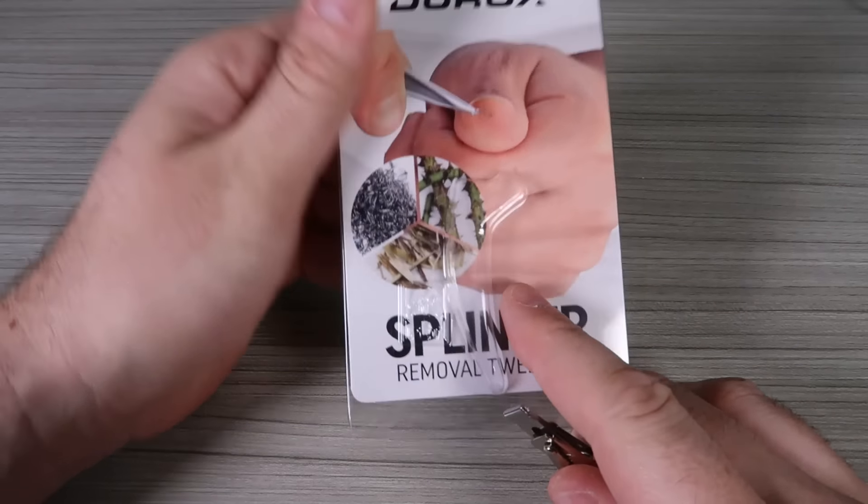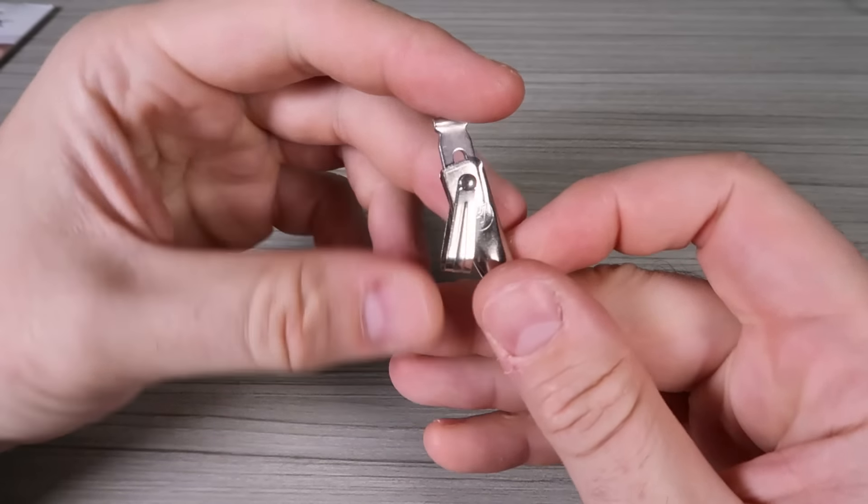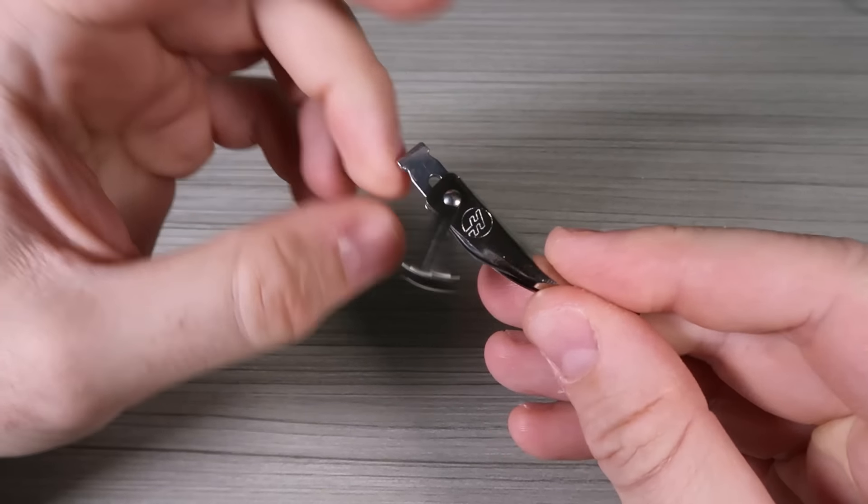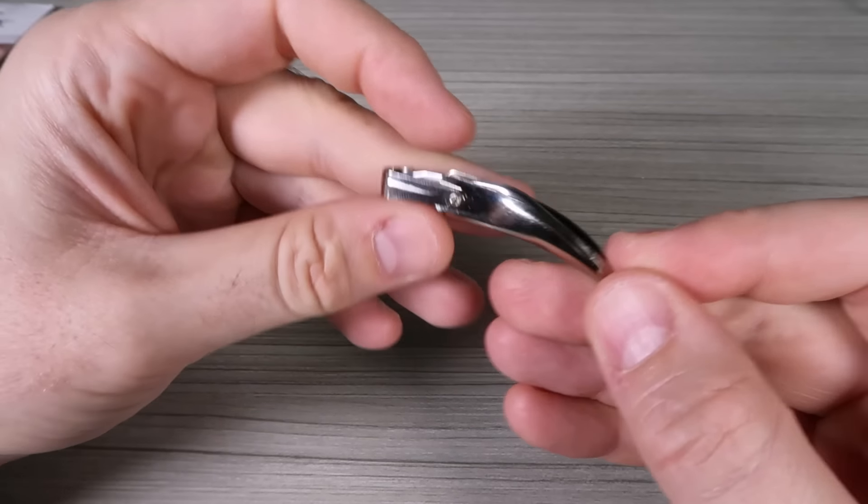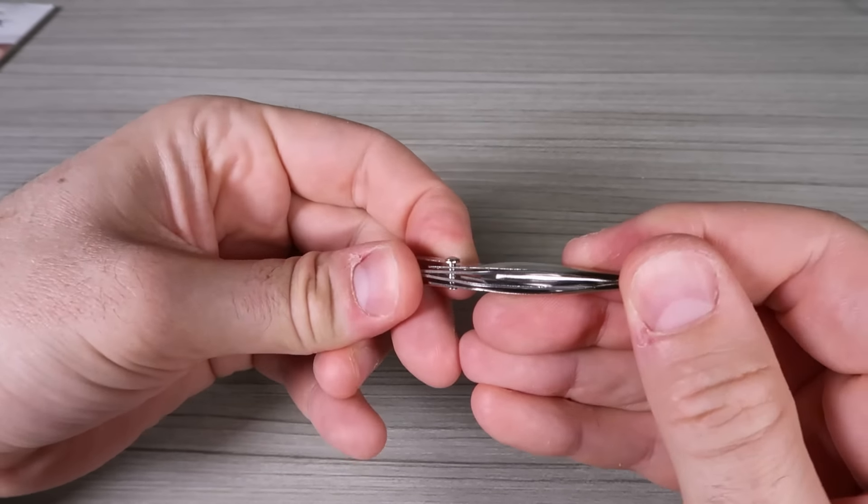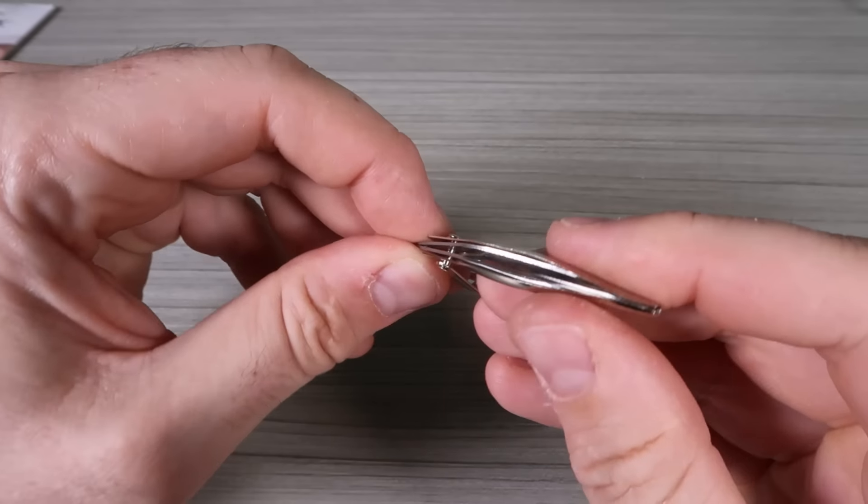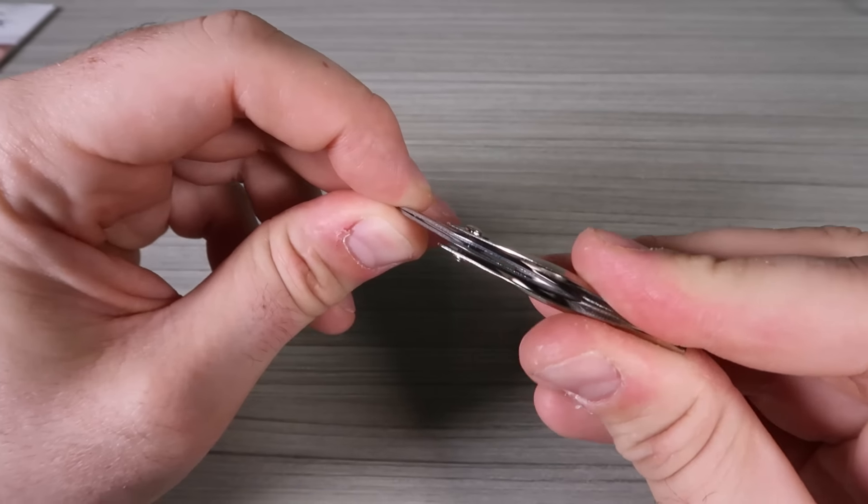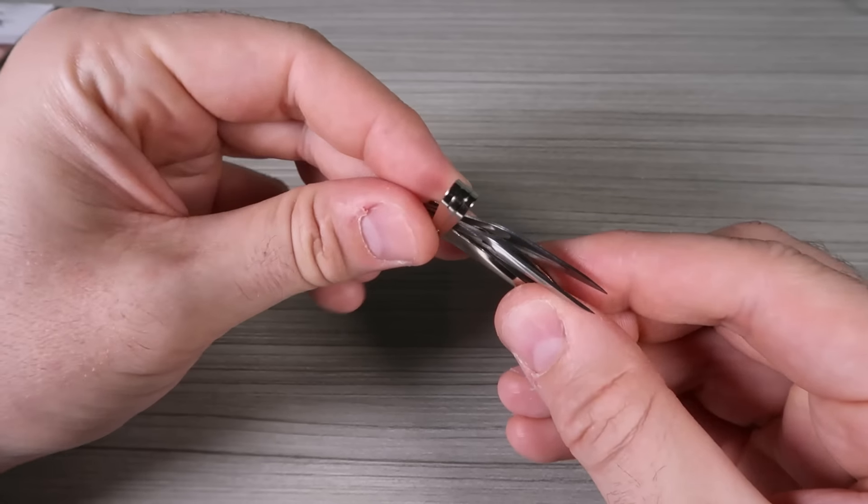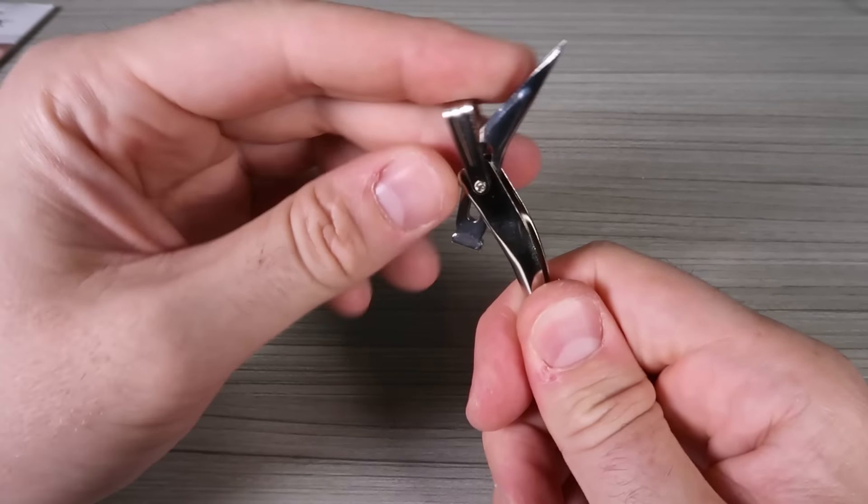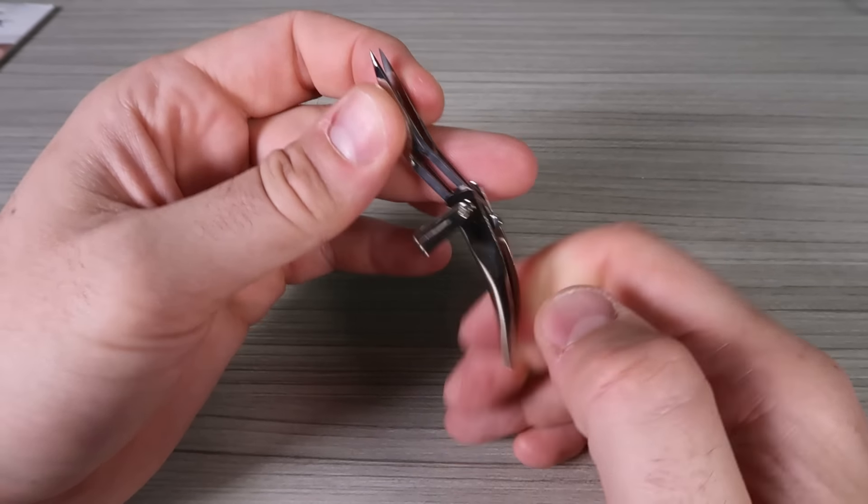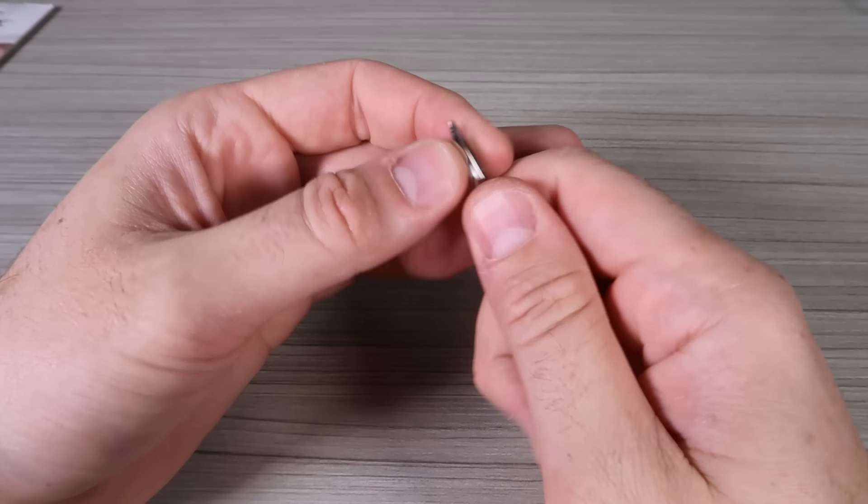Splinter removal tweezers. To go tweezers. Keychain size. There's a little holder for the keychains. So I guess I'll fold it. Which way do I fold it? Interesting. I pull it out. And flip it over. That's cool. And I flip it over. This way. And lock it back in. There it is. It just holds it this way.